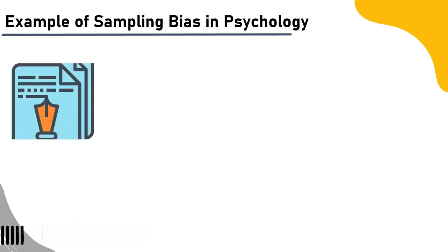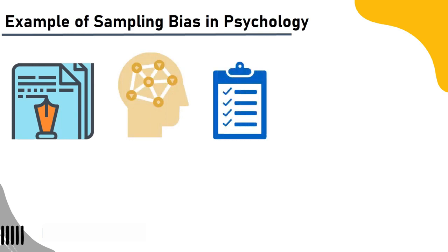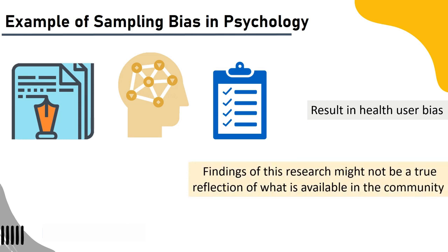Example of sampling bias in psychology: Consider a study that tries to understand the mental health of people in a specific group. The researcher seeks volunteers to collect the needed data. When persons with good or excellent mental health volunteer, this can result in healthy user bias. The findings of this research might not be a true reflection of what is present in the community.